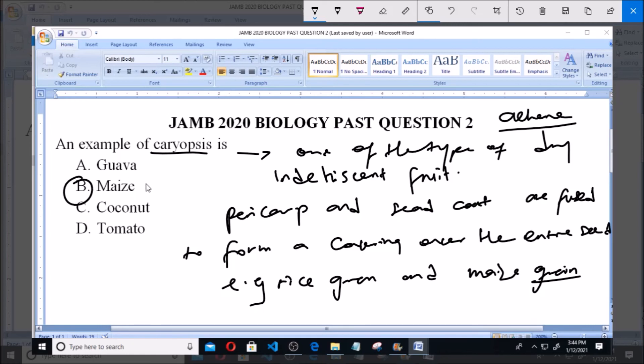And so, option B is the correct answer to this question. It is an example of caryopsis, which is a dry indehiscent fruit. Thank you, and ensure to subscribe for more videos and past questions.